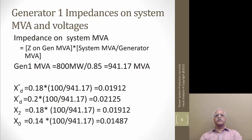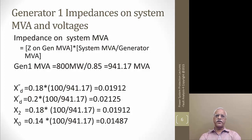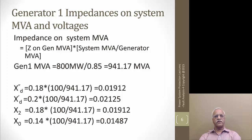To convert generator impedance to system MVA and voltages: Z of the generator on generator MVA multiplied by system MVA divided by generator MVA. The rated MVA of generator one is 800 megawatts divided by 0.85 power factor, which gives 941.17 MVA. So the sub-transient reactance on 100 MVA base is 100 divided by 941 times 0.18, which comes to 0.1912 per unit. Negative sequence is also 0.1912, and zero sequence is 0.01487.